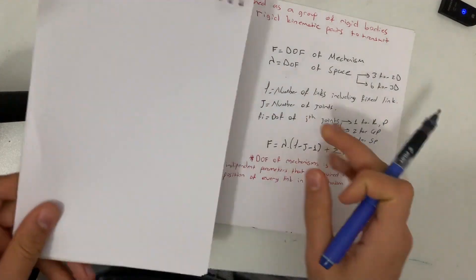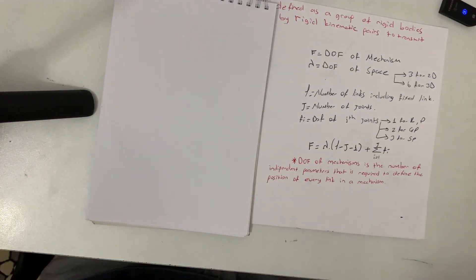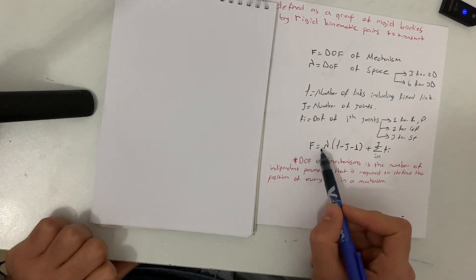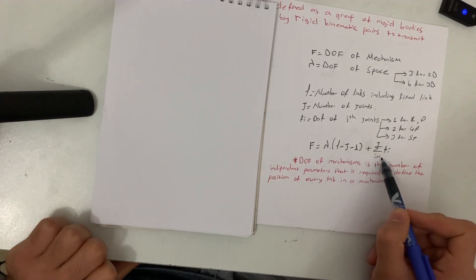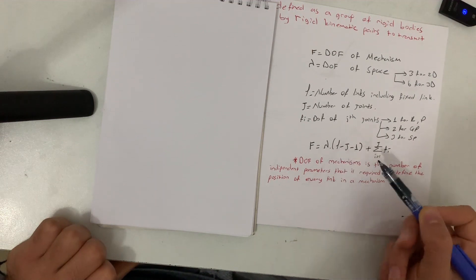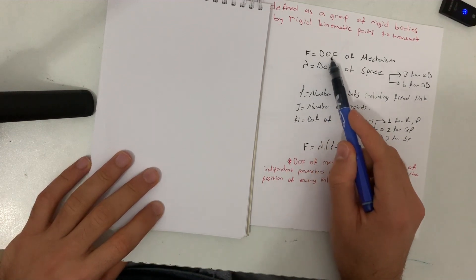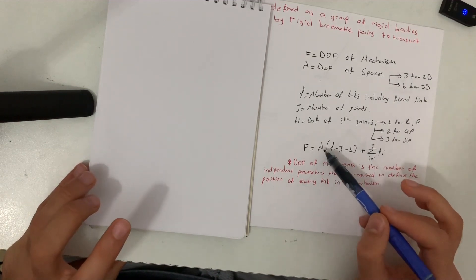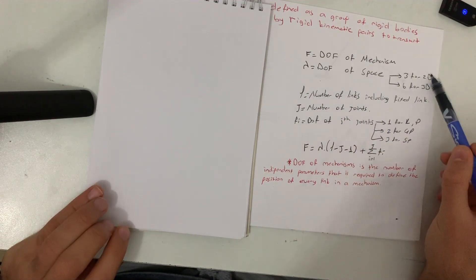We need to understand the formula for the degree of freedom of a mechanism. The formula is: F equals lambda times (l minus j minus one) plus the summation from one to j of fi. Here, F is the degree of freedom of the mechanism — that is what we are solving for.